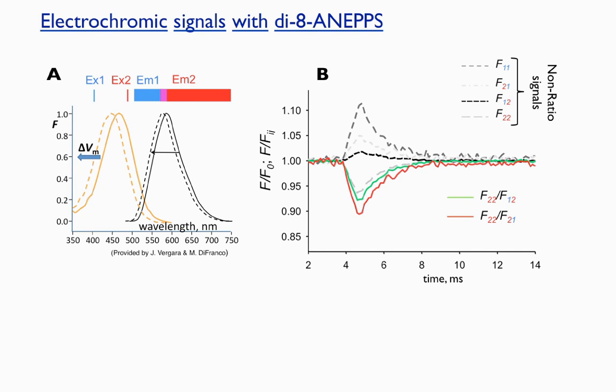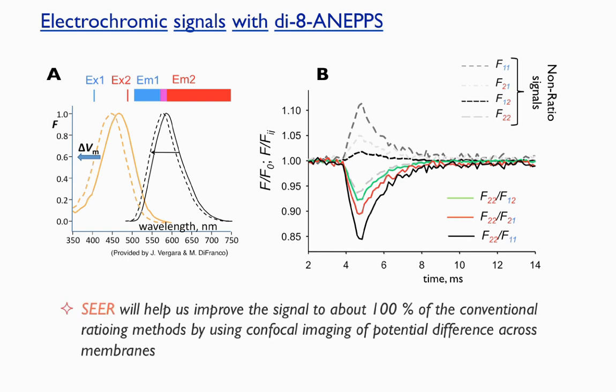We can improve even more the sensitivity of the signal using SEER by shifting at the same time the excitation and emission and calculating the ratio F22 over F11, shown here in black. A formal derivation, which can be found in the paper, shows that SEER improves the conventional ratiometric by about 100% in confocal imaging of potential difference across the membrane of skeletal muscle fibers.